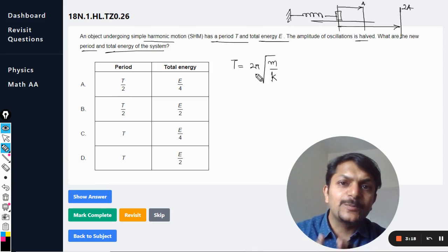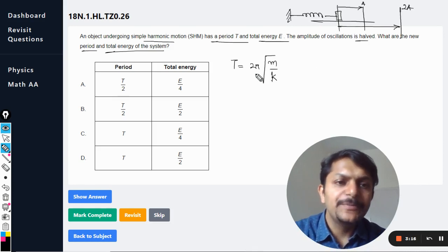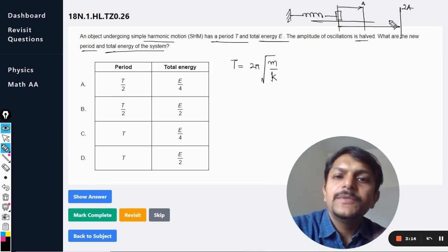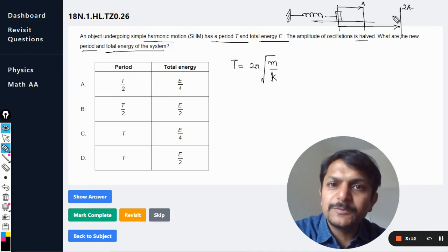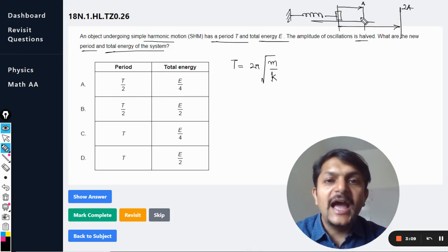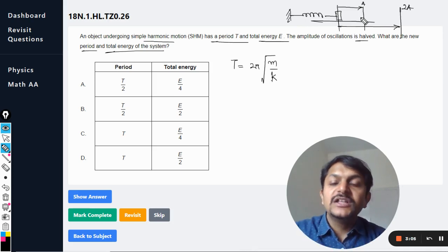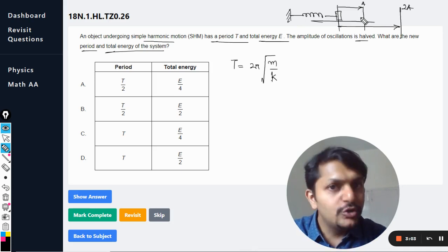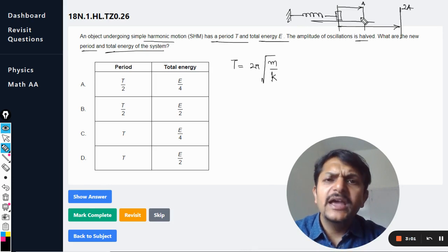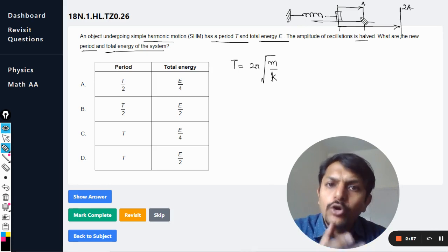Well, the explanation for that is this: more is the amplitude or more is the displacement, more becomes the restoring force and more becomes the acceleration of the body with which the body is getting restored to the mean position, thereby increasing the average velocity of the body.